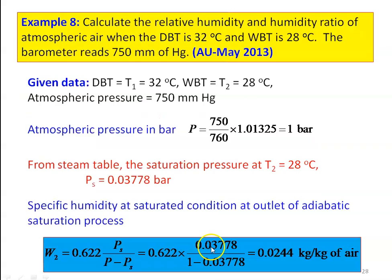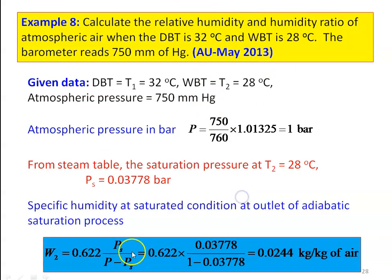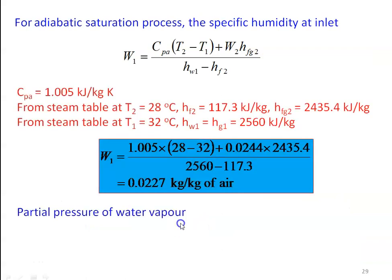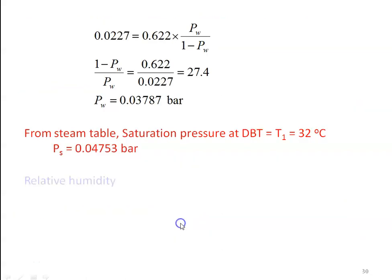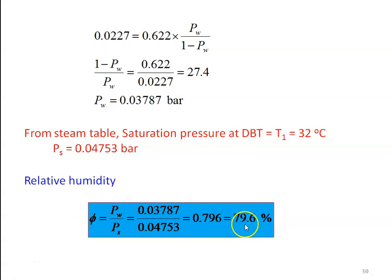We have calculated the relative humidity and the specific humidity. Humidity ratio is specific humidity, which we calculated as W1 = 0.0227 kg per kg of dry air, and relative humidity φ = 79.6 percent.